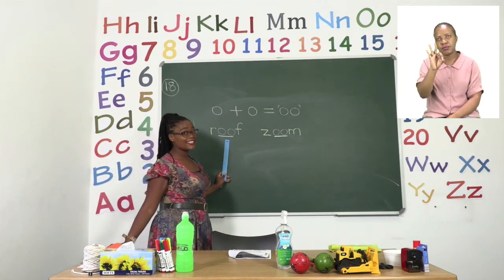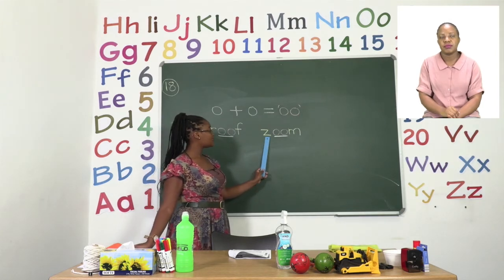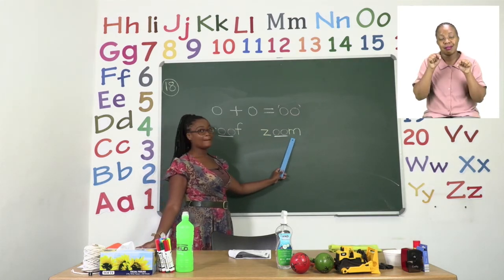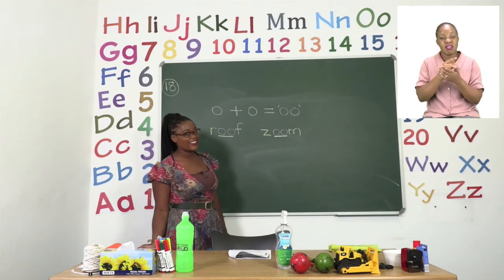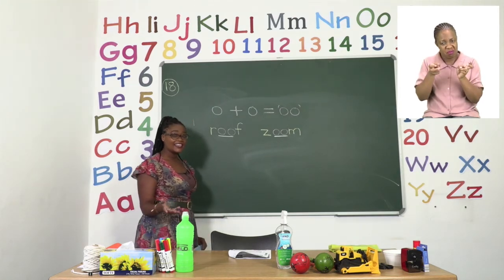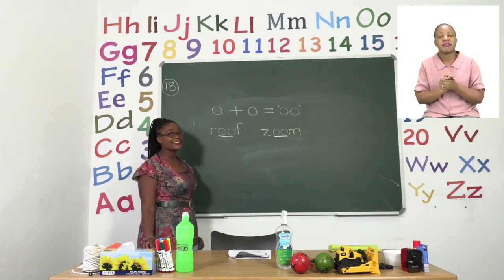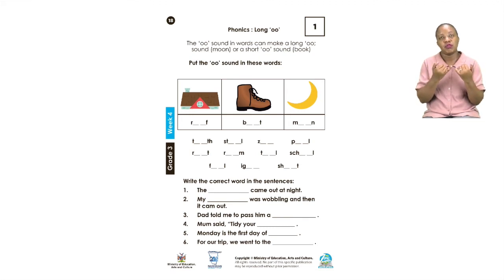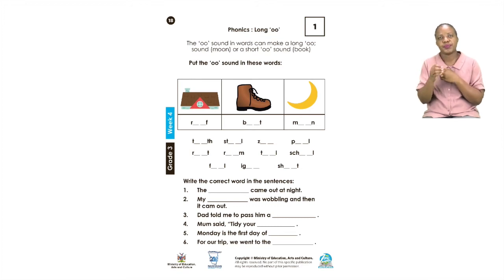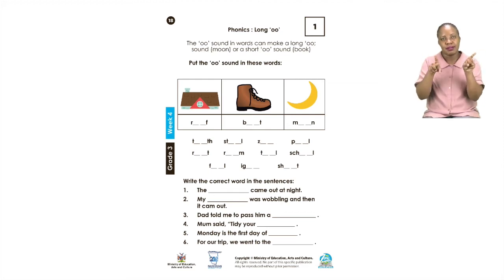Another word we are using these days is ZOOM — like the Zoom meetings your parents sometimes have. In the booklet we have other examples. It is your job to fill in the OO sound, and after you put the OO sound in the words, I'd like you to read the words. Then you are going to use those same words to write the correct one in the sentence for it to be completed.